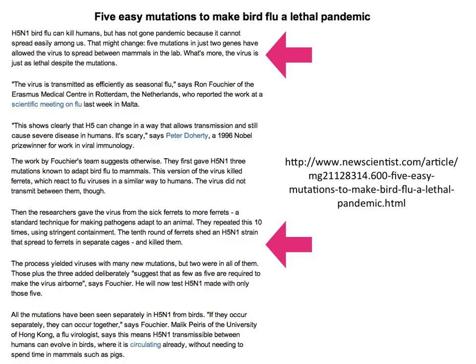He infected a ferret, and the ferret in the neighboring cage got infected without any contact. Then you look at the virus to see what mutations are causing this phenotype. An article in New Scientist appeared titled 'Five Easy Mutations to Make Bird Flu a Lethal Pandemic.' It said the virus can kill humans but has not gone pandemic because it can't spread — and that might change, since five mutations in two genes allowed the virus to spread between mammals in the lab. Fouchier said it transmits as efficiently as seasonal flu.